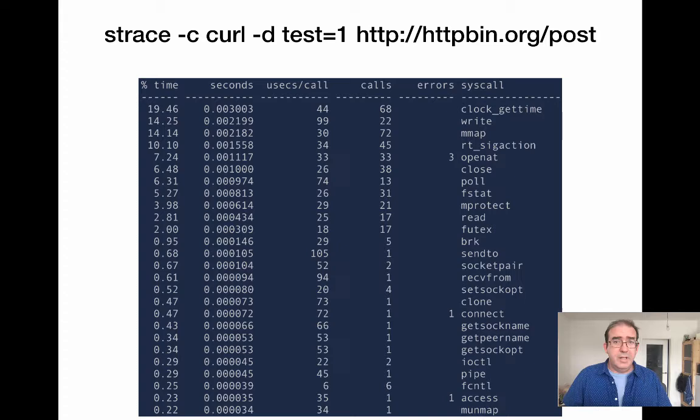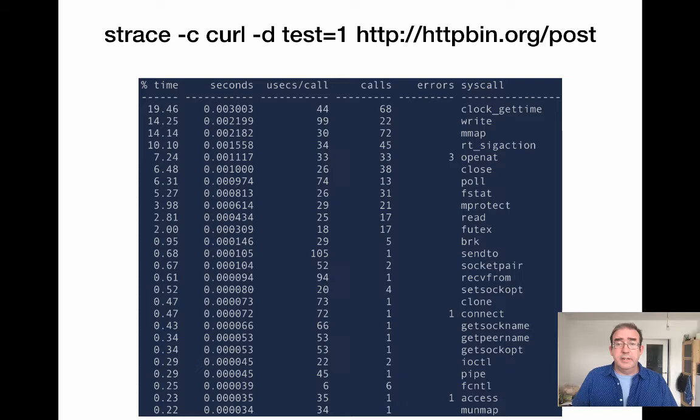Let's try another strace — now we're going to do a POST. I'm using httpbin.org/post, which will just replay back what you posted. You can see once again where it's spent its time, and now you can see the write system call. This starts giving me a sense of what the application is doing, what system calls it's making, and where it's spending its time.